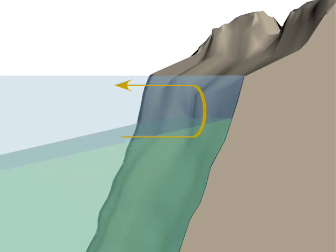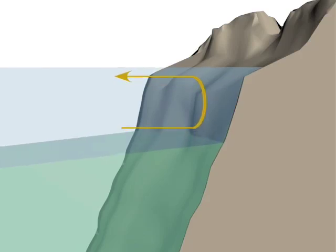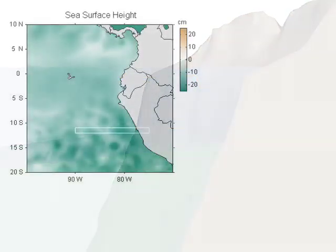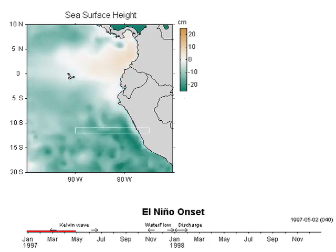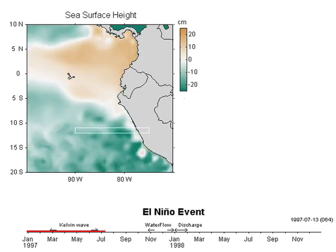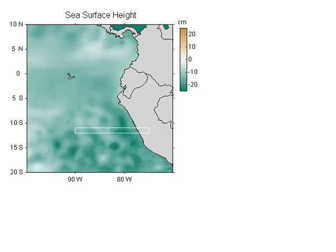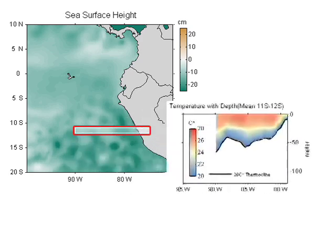Near Peru, the lowering of the thermocline allows warm offshore water to flow towards the coast, which results in the Peruvian coastal thermocline deepening even more. Sea surface height data show the Kelvin waves propagating north and south along the South American coast. Ocean model data show lowering of the 20 degrees Celsius thermocline near Peru.